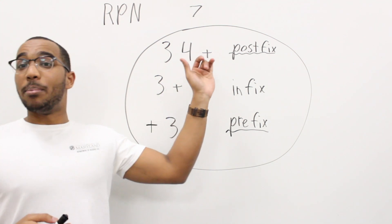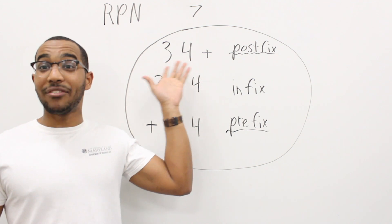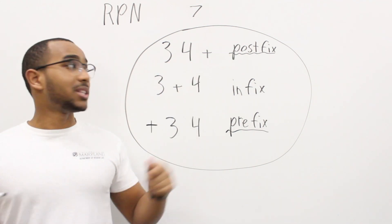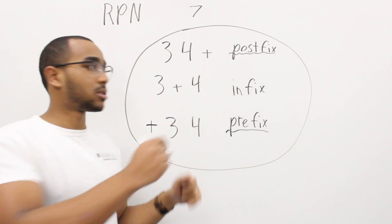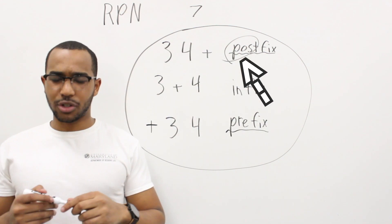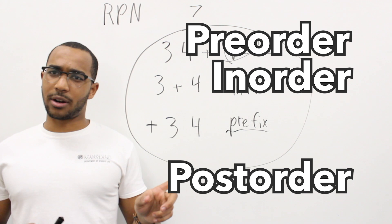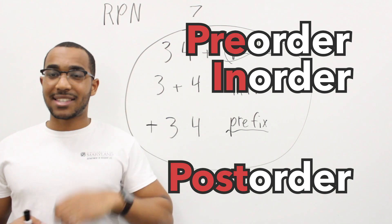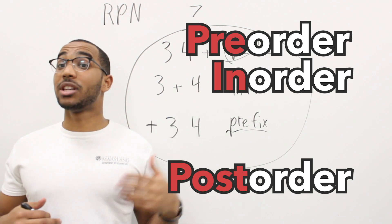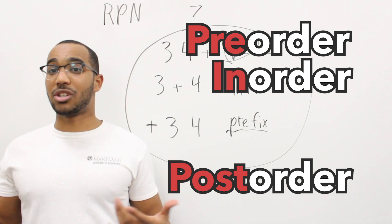There is postfix notation, where we have the numbers and then the operator. Notice how it says 'post' — postfix means afterwards. This reminds me of our tree traversals: pre-order, in-order, and post-order. The prefix tells us what kind of traversal it is. So this is related to that — it's basically the same classifications.